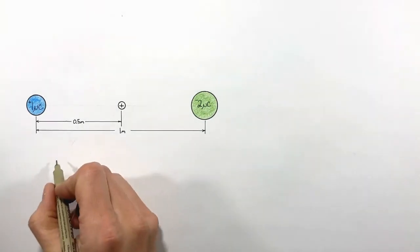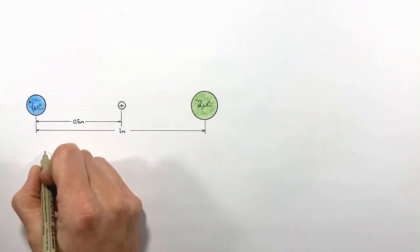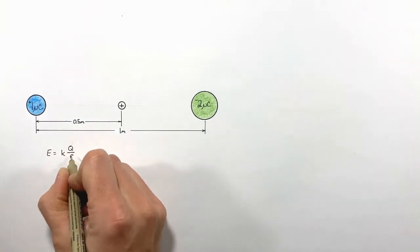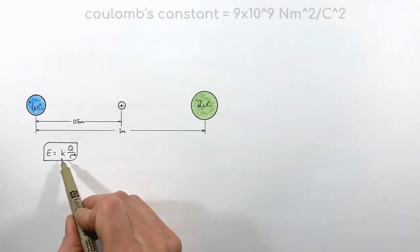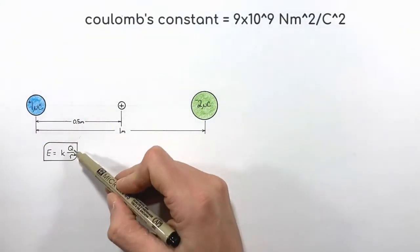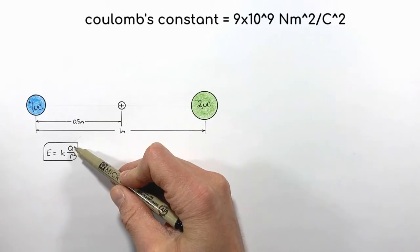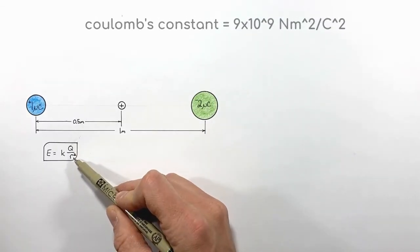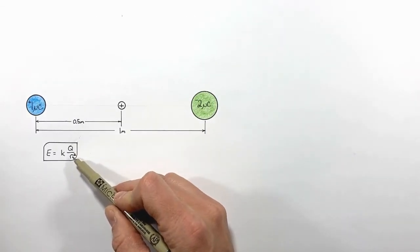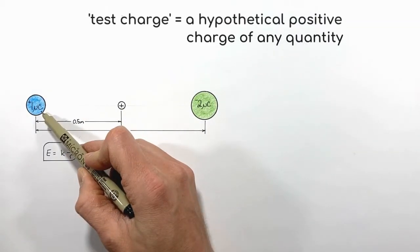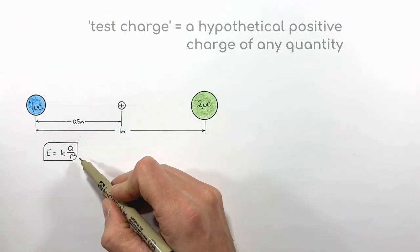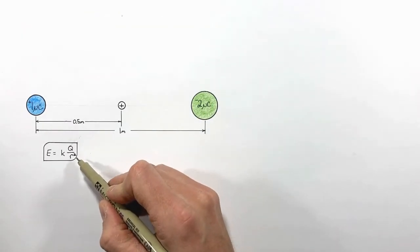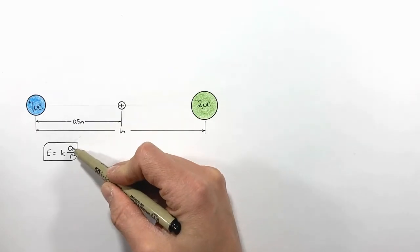The electric field is given by a formula where k is Coulomb's constant, q is the magnitude of the charge, and r is the distance between our test charge and the charge we're concerned with. Realize this equation only tells us about the electric field as the result of a single charge.